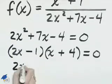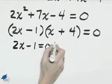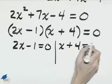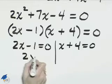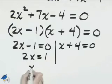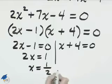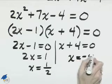Set each of these equal to 0, and we'll solve. 2x equals 1, and x is equal to 1 half. Here, x is equal to negative 4.